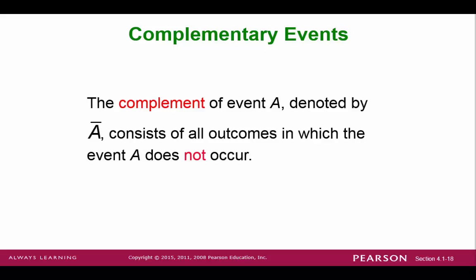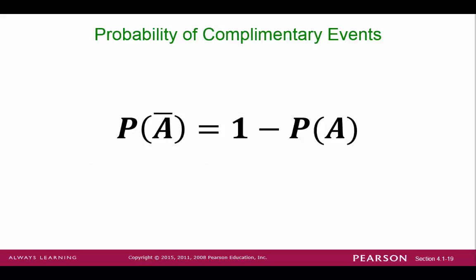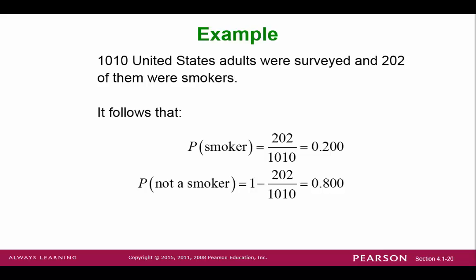The complement of an event is anything else in the sample space that does not include the event. For example, in rolling a 6-sided die, the complement of rolling a 3 is rolling any other number aside from 3, like rolling a 1, 2, 4, 5, or 6. Suppose we knew the probability of an event occurring; we can find the probability that its complement would occur by subtracting it from 1. Think about 1 as 100%. For example, suppose 202 people out of 1,010 smoked. If we randomly selected a person from this group, then there is an 80% chance that we select someone who does not smoke. This calculation was made using the complement rule.